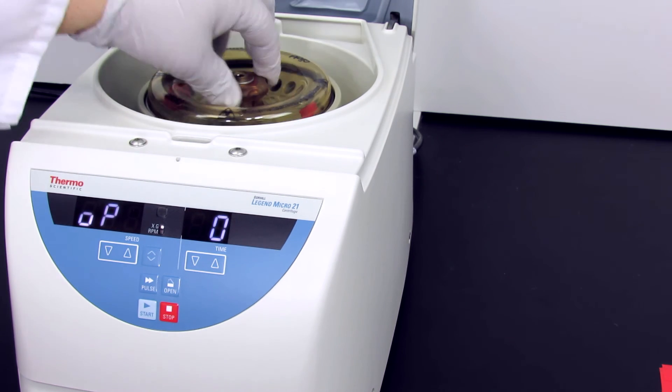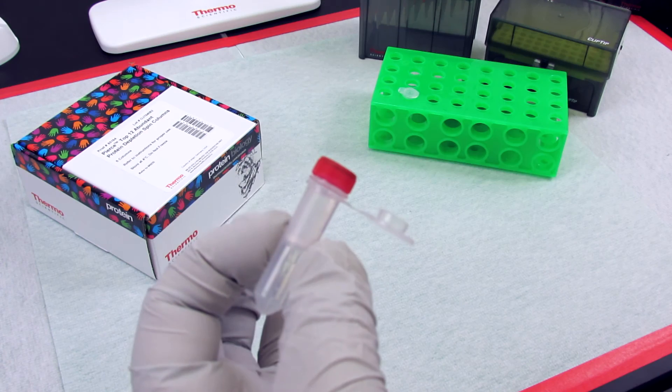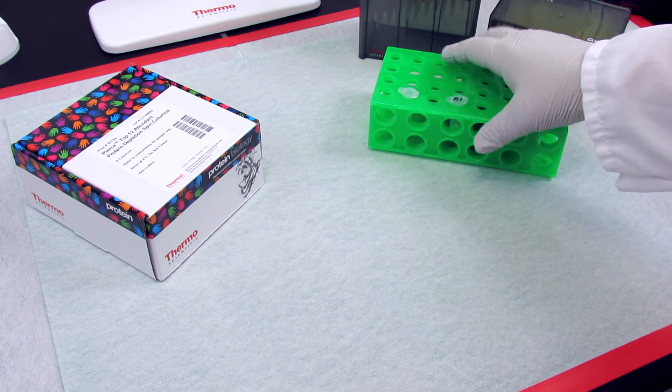The spin column design allows the sample to flow into the collection tube, leaving the resin-bound abundant proteins in the column. Just discard the column, and your sample is now ready for downstream analysis or digestion.